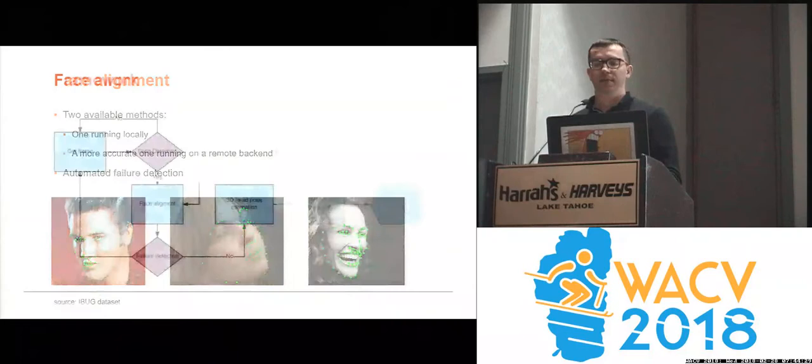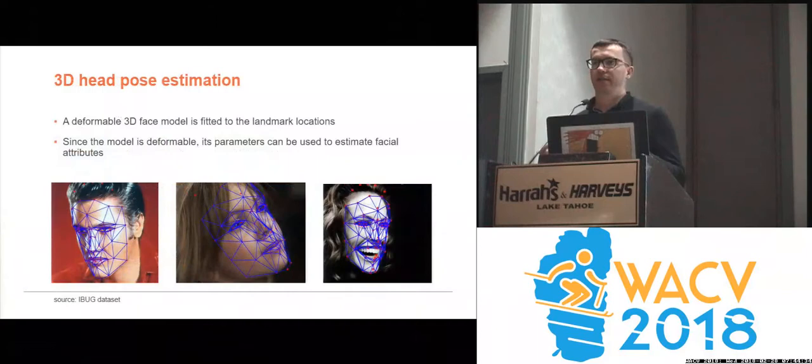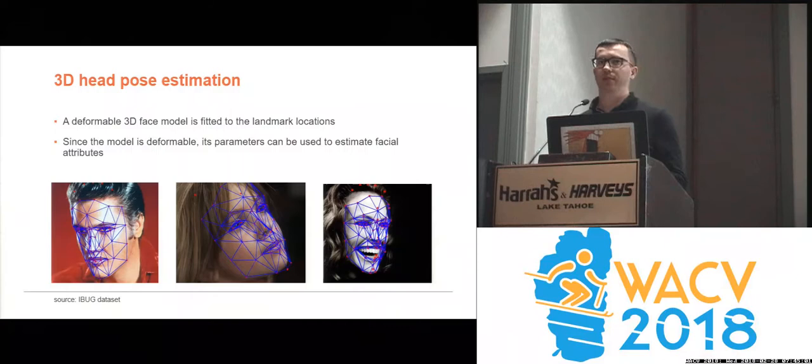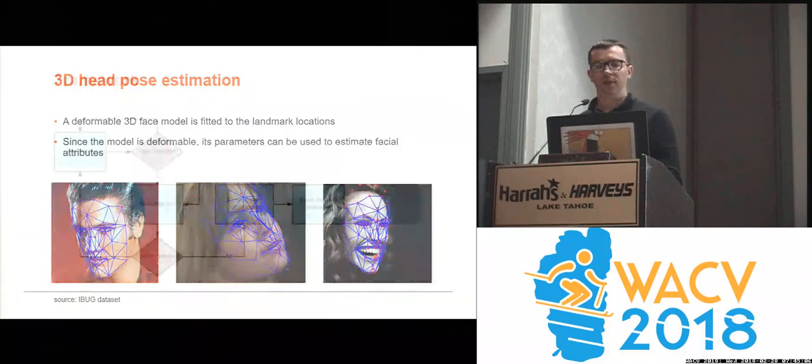If that is successful, the next step is 3D head pose estimation. This is done using a very fast method which fits a projection of a deformable 3D face model to the previously localized landmarks. Since the model is deformable, the parameters of the model can be used to estimate facial attributes such as whether the mouth is open or whether the person is smiling. This can in turn be used to trigger certain actions, such as the fire breathing you saw previously — the fire would go out of the person's mouth when the mouth is open.